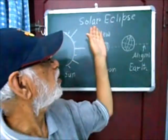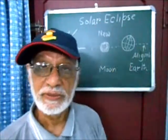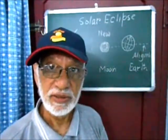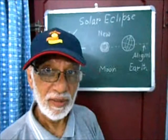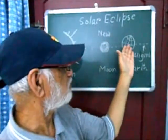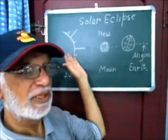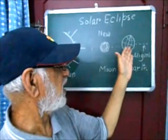Today we will learn about solar eclipse. Solar eclipse occurs when the new moon comes between the Earth and the Sun, and the three of them are aligned.